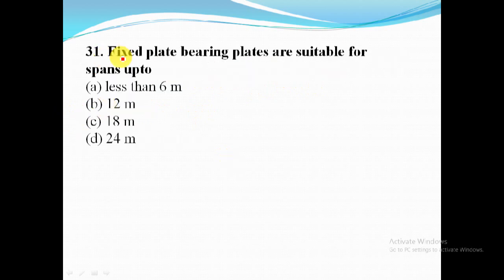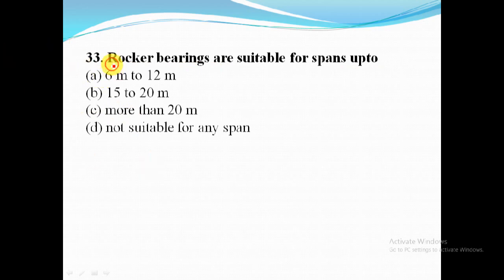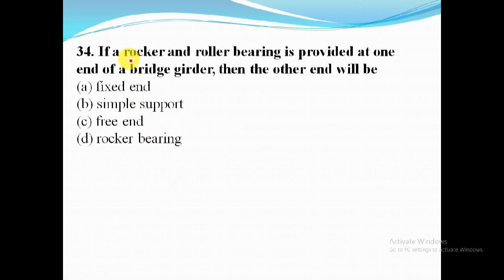Fixed plate bearings are suitable for spans up to 12 meter. Cast bearings are suitable for spans of 12 to 20 meter. Rocker bearings are suitable for spans of more than 20 meter. If a rocker and roller bearing is provided at one end of a bridge girder, then the other end will have a rocker bearing.